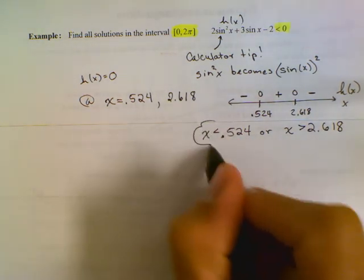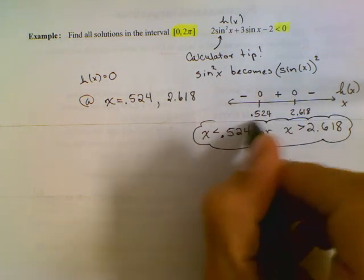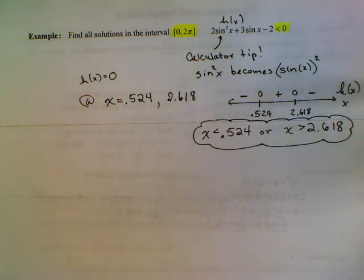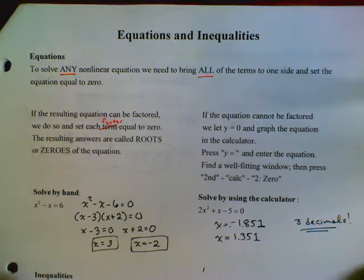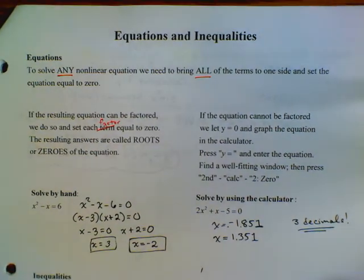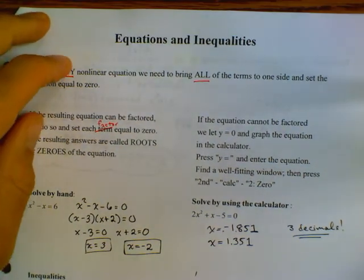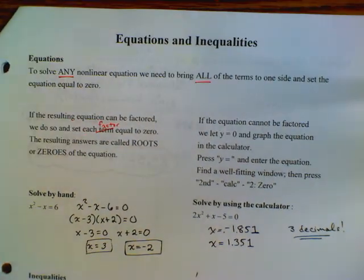The answers less than zero are x less than 0.524 or x greater than 2.618. That is how you solve nonlinear equalities and inequalities. If you have any questions, make sure you send them to me. Thanks a lot, bye.